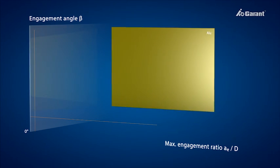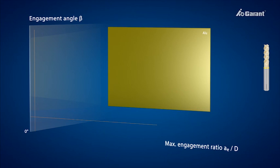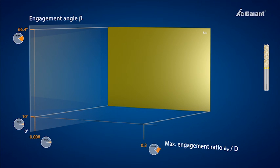For machining aluminium, the optimum engagement angle lies between 10 degrees and 66.4 degrees, corresponding to an engagement ratio AE to D of 0.008 to 0.3.